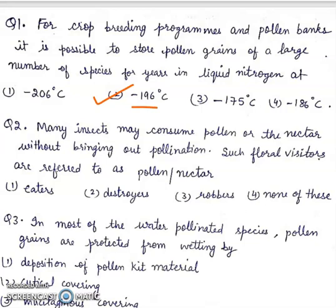Question 2. Many insects may consume pollen or the nectar without bringing out pollination. Such floral visitors are referred to as: pollen/nectar 1. eaters, 2. destroyers, 3. robbers, 4. none of these. Right answer will be 3rd, pollen or nectar robbers.